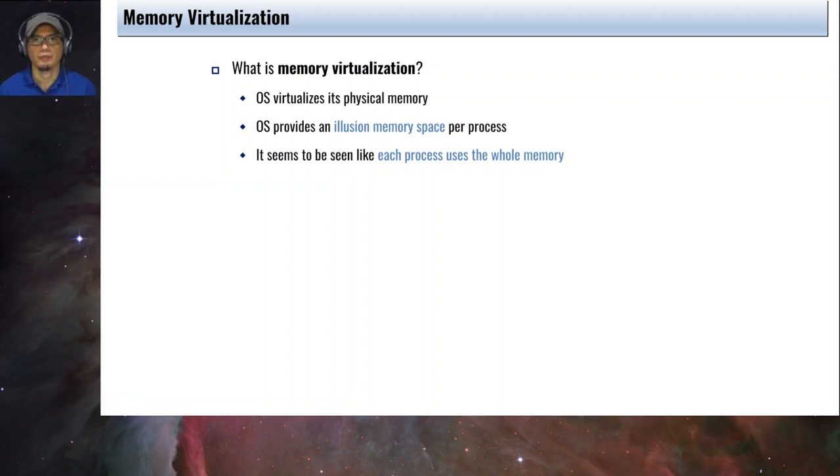The question to ask is what is memory virtualization? We have CPU virtualization, as I mentioned earlier. Now how does memory virtualization work? The OS or the kernel virtualizes its physical memory. Remember that the program will be loaded to the main memory. And the OS provides an illusion of a virtualization of a dedicated memory space for process. And it seems like each process uses the whole memory. So this is essentially what virtualization is.